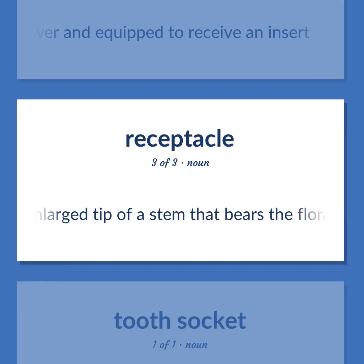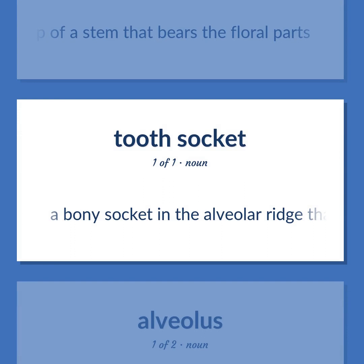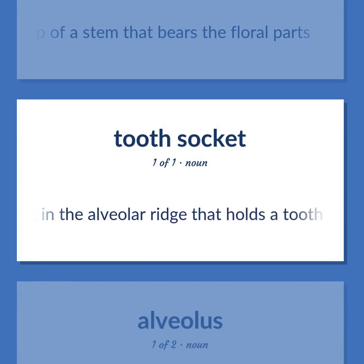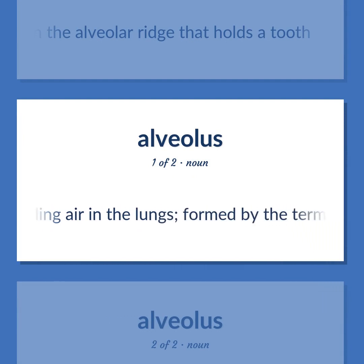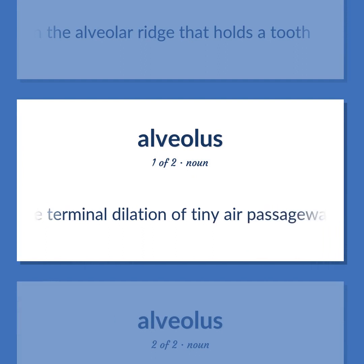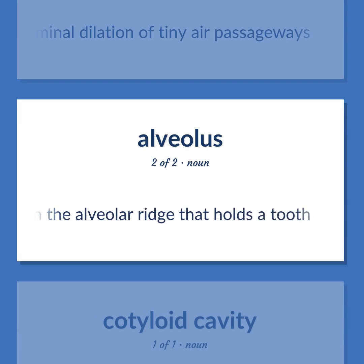Enlarged tip of a stem that bears the floral parts. A bony socket in the alveolar ridge that holds a tooth. A tiny sac for holding air in the lungs, formed by the terminal dilation of tiny air passageways.